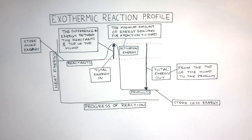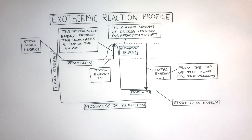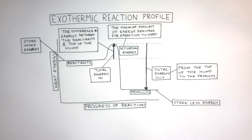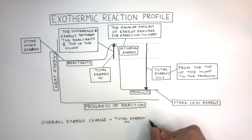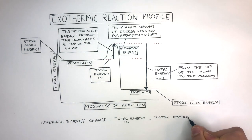Notice how the reactants store more energy and the products store less energy. The energy has been released into the surroundings, causing the temperature of the surroundings to increase. We can measure this overall energy change using a simple equation: overall energy change equals total energy in, take away total energy out.